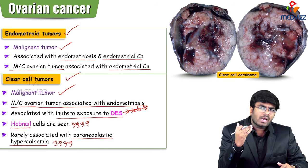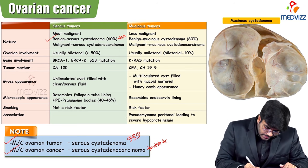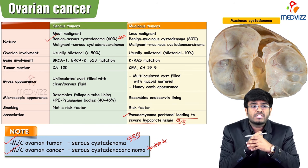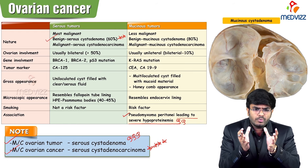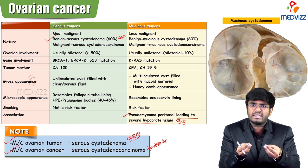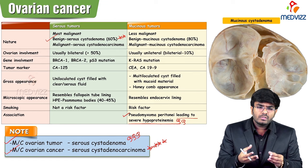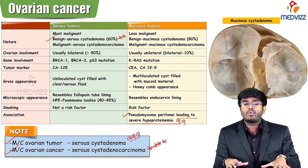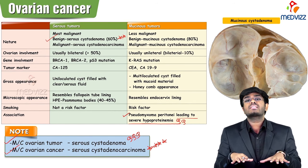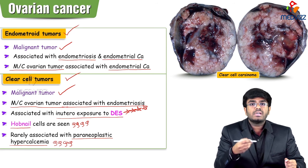Mucinous tumors associated with pseudomyxoma peritonei also cause severe hypoproteinemia. Why? Because mucin is protein, and when mucinous tumors rupture, all the mucin pours into the abdomen — a third space — where it is not needed. As a result, protein levels in the body drop, causing hypoproteinemia. So pseudomyxoma peritonei from mucinous ovarian tumors leads to hypoproteinemia.